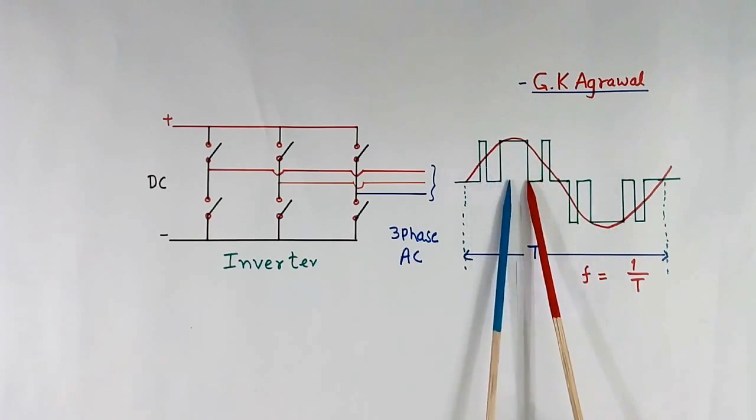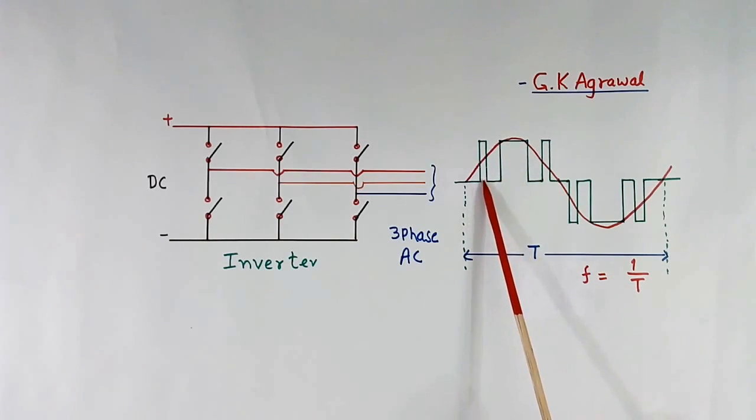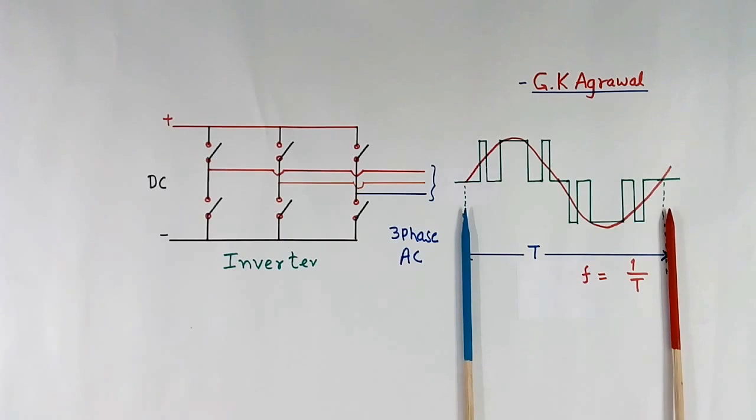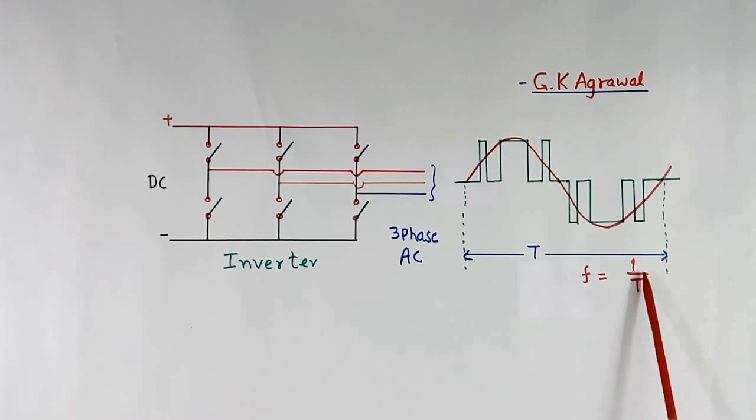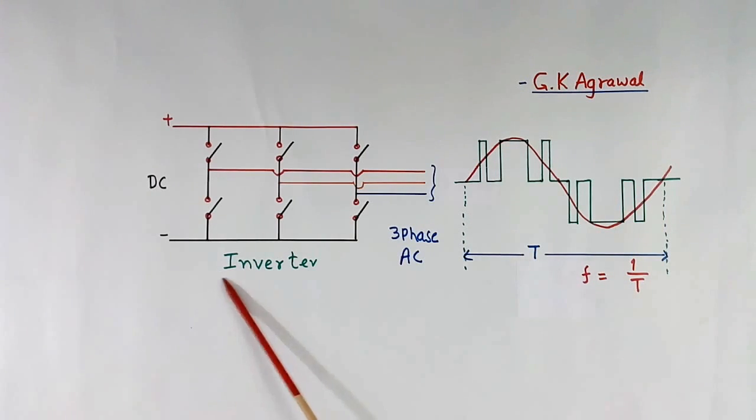See here. IGBTs are on for longer duration, so we get more voltage. Here on period is less, so we get less voltage. So this is AC. I have shown only 1 phase. There will be 3 phases like this. And this is the time period of this red color AC. And frequency will be equal to 1 by T. If we want motor speed more, we want frequency more. So T we have to reduce. So this will have to be reduced. So this inverter does 2 functions mainly. One is to generate 3-phase AC, and second is to control the frequency.